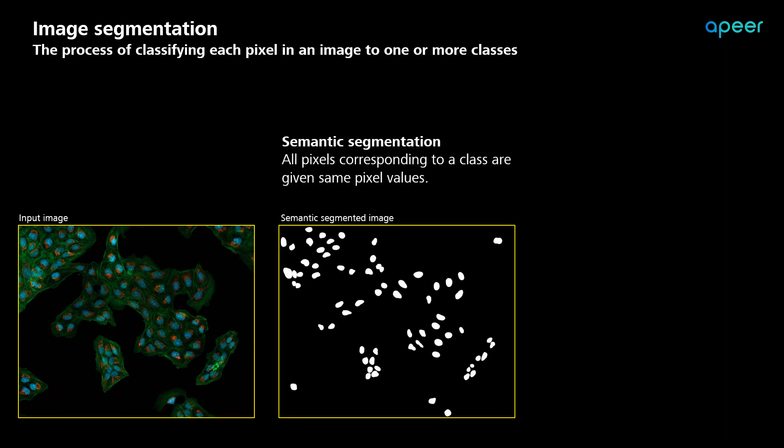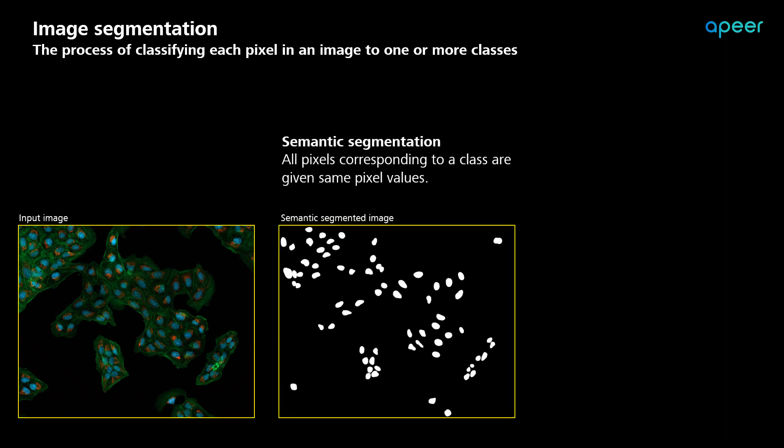Semantic segmentation is a type of image segmentation where all pixels corresponding to a class are given the same pixel values. In this example, all the pixels corresponding to the background are given a value of 0 and the ones corresponding to the nuclei are given a value of 255, showing them in bright pixels in this image.